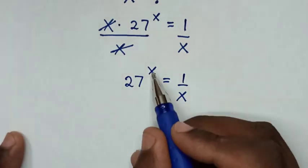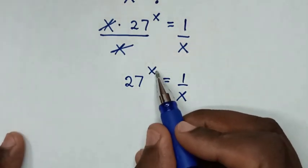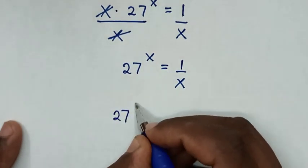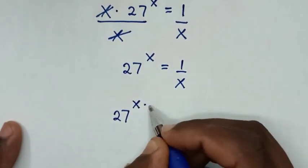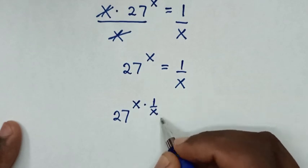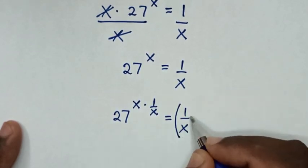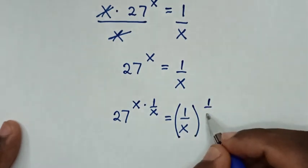In the next step, to remove this power of x, we will multiply by power of 1 over x on both sides. So it will be 27 to the power of x times power of 1 over x equals 1 over x in brackets to the power of 1 over x.